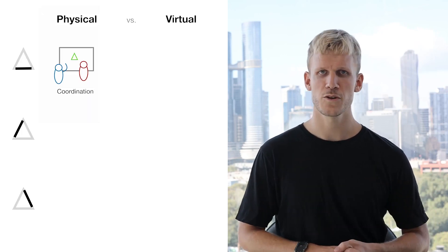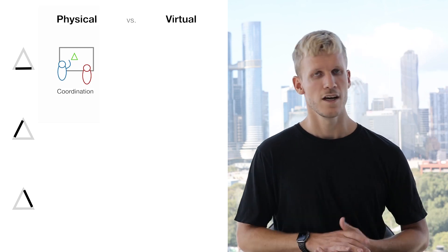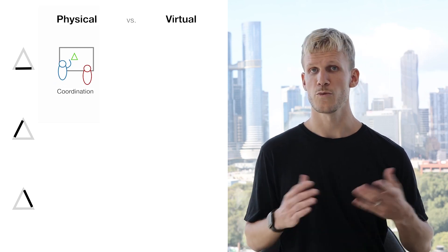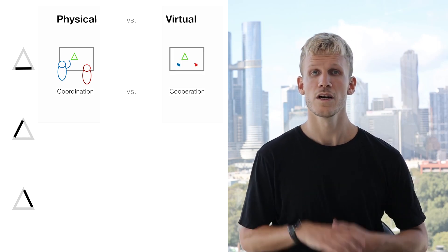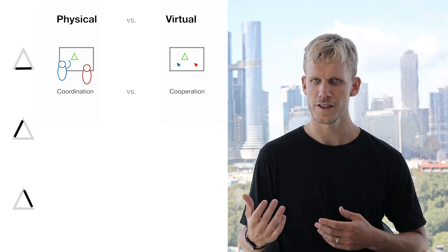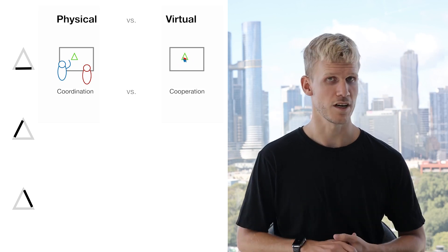Our physical bodies can naturally coordinate the turn-taking when we sketch, but sometimes bodies might also be in the way of each other. Virtual whiteboards, on the other hand, enable a joint cooperation. But without the real bodies, the turn-taking then becomes harder.